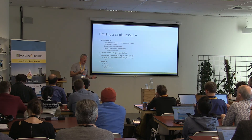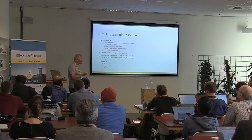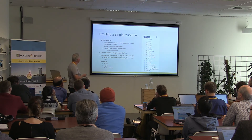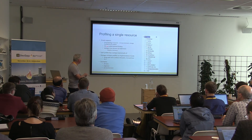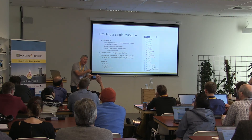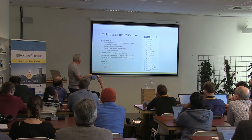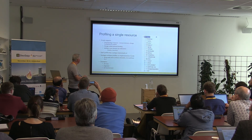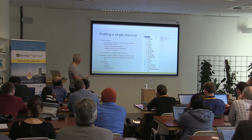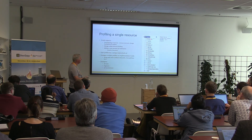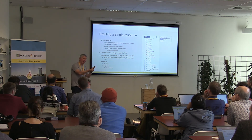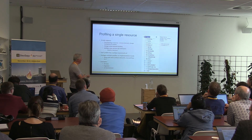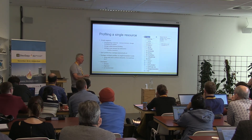There are three main aspects to profiling. First, you constrain a resource by removing elements you don't need. Second, you change bindings — this is where value sets come in, which is why value sets are so important to understand. Third, you add new elements as extensions. For example, you might require that a patient has a national identifier, and that it's required — you've got to have at least one.